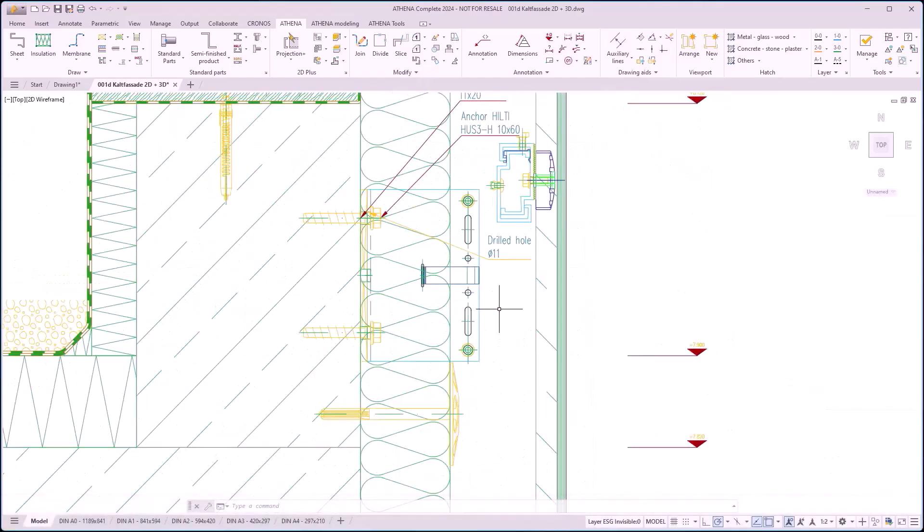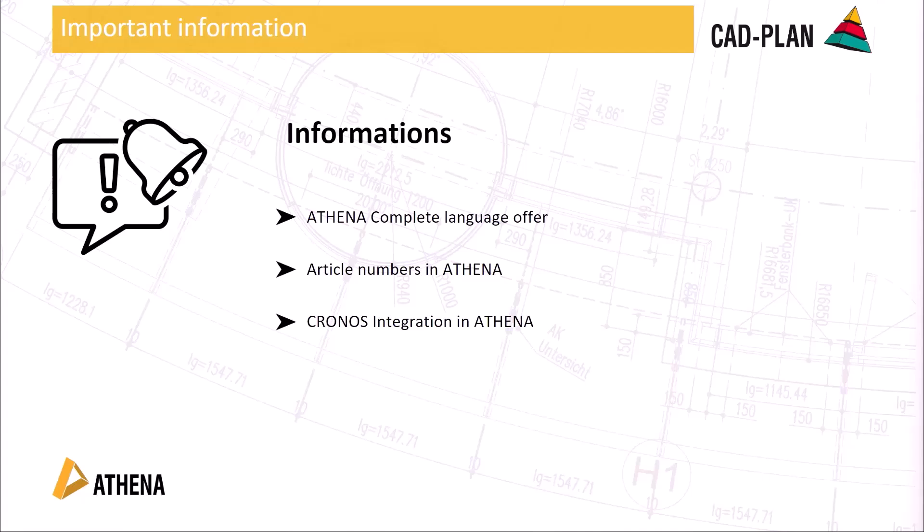We come to some important information. The Athena complete language offer is included, meaning German, Spanish, French, Italian, and of course English. We also include a feature for item numbers in Athena and the Kronos integration. The function of item numbers includes a nice feature for your company — in the drawing process you can configure the specific needs of your company, like the configuration of 100,000 standard parts. Your team will have direct access to the right item number, securing your workflow between external and internal team members.